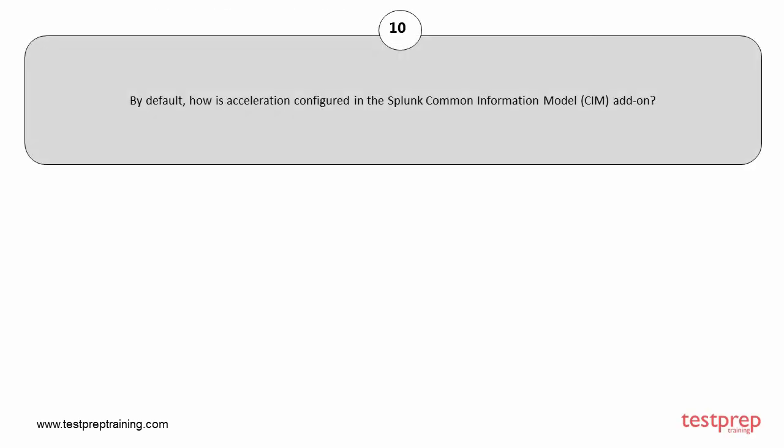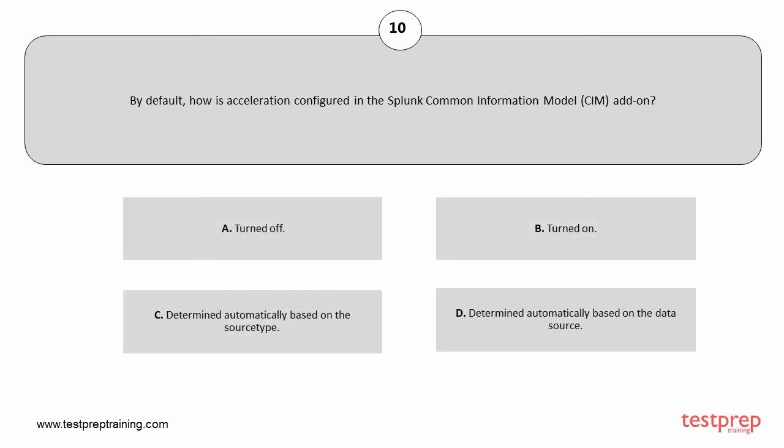Question number 10. By default, how is acceleration configured in the Splunk Common Information Model add-on? Your options are: A. Turned off. B. Turned on. C. Determined automatically based on the source type. D. Determined automatically based on the data source. The correct answer is option A.